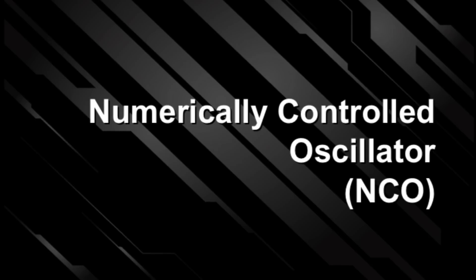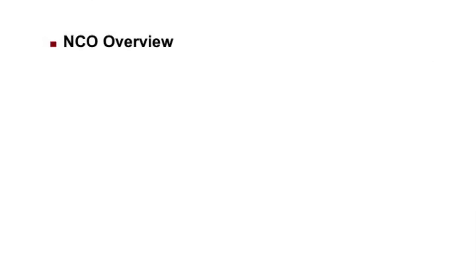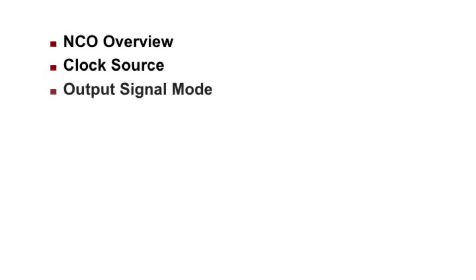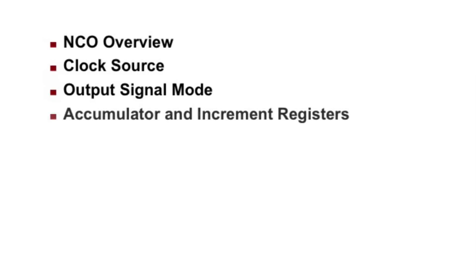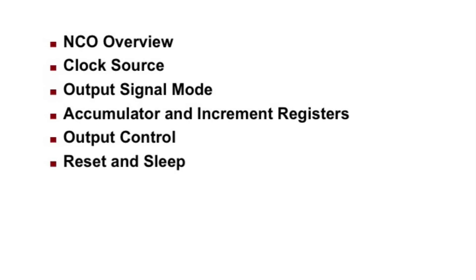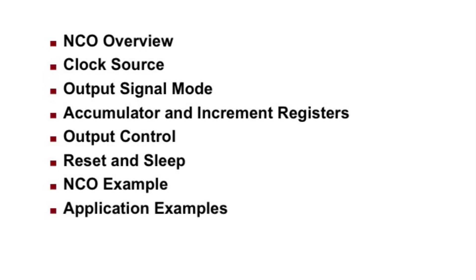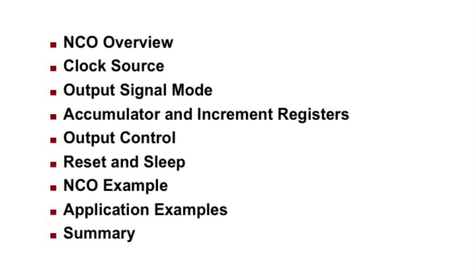This self-paced class will introduce the numerically controlled oscillator and how to use it. In this training class, I'll cover an overview of the NCO, selecting the clock source, choosing the output signal mode, the accumulator and increment registers, the output control options, operation in sleep mode and effects of a reset, a brief example of NCO operation, a few example applications, and then a summary.